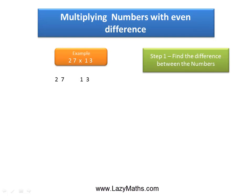The first step is to find out the difference between 27 and 13. 27 minus 13 equals 14. 14 is an even difference.